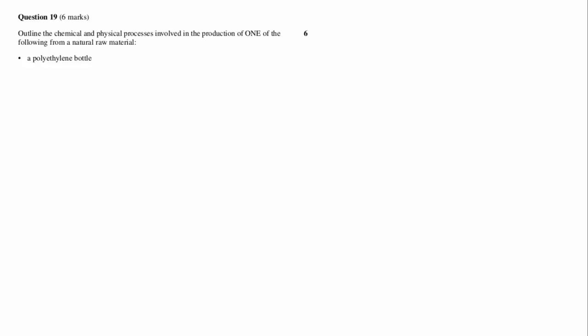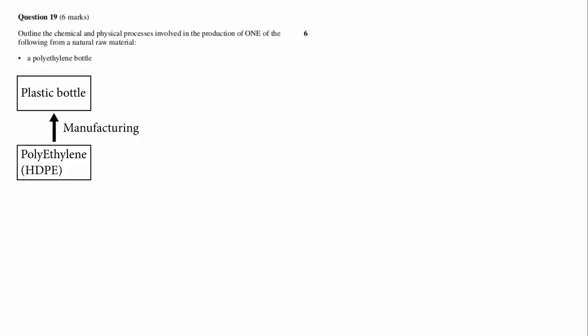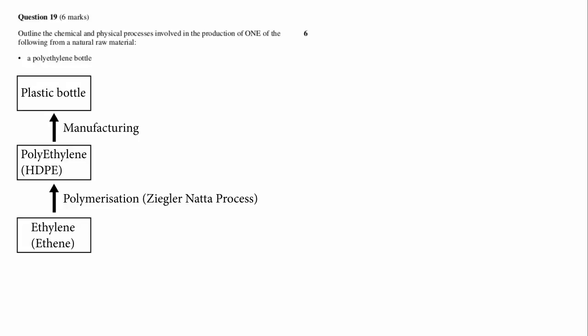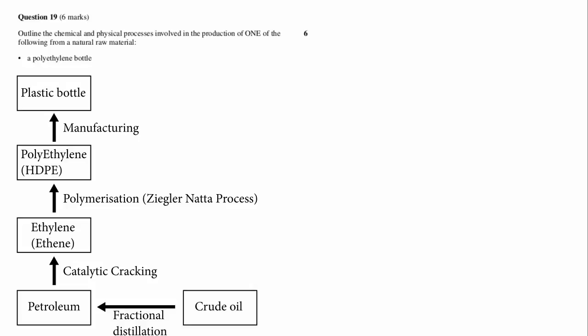If you hadn't memorized this and you were working it out, you'd have to go backwards. We're given the final product, which is a plastic bottle. We know that's made from polyethylene, but we need to choose between high-density and low-density polyethylene. Both can be made into bottles — I'm going to choose high-density here, but you'll need to know how both processes work for the HSC. HDPE is made from ethylene, which can be produced from cracking longer-chain hydrocarbons found in petroleum. Petroleum is created by refining crude oil. So now we've got our basic flowchart completed backwards.